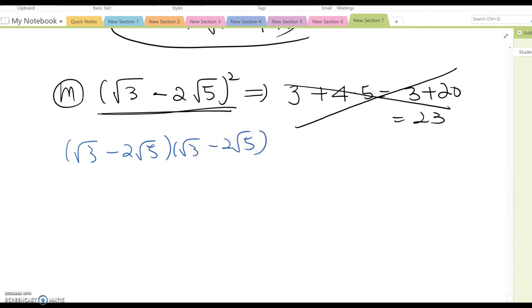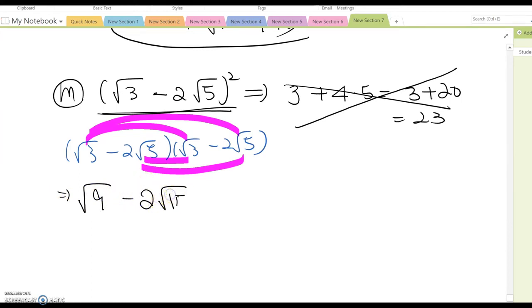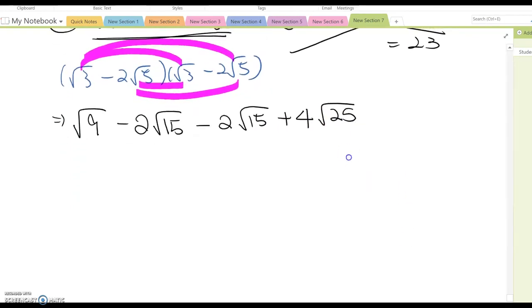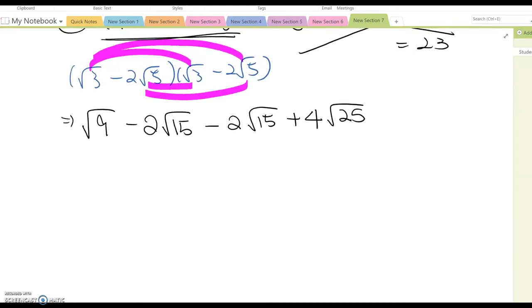And then you have to FOIL them, so it becomes square root 9 minus 2 root 15 minus 2 root 15 plus 4 root 25. So you may notice that I just multiplied between rational numbers and also between the radical numbers only.